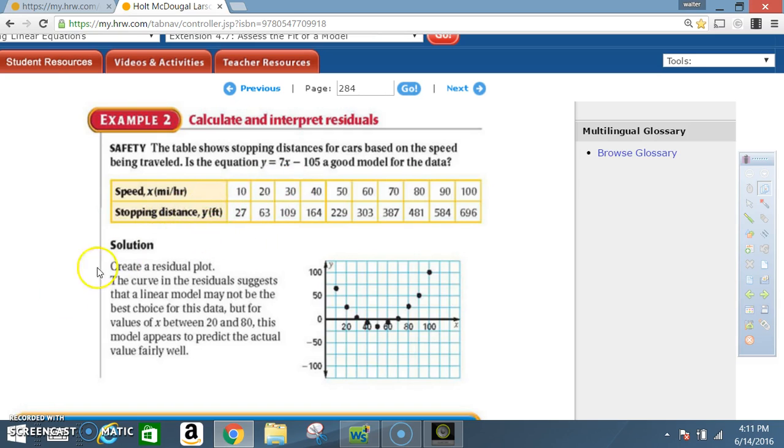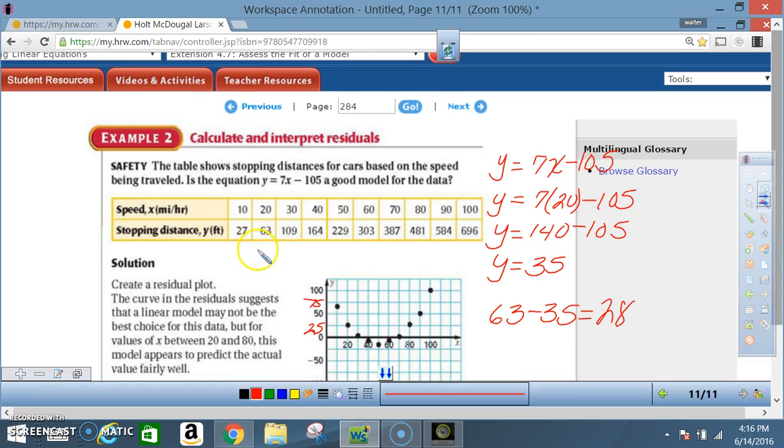Solution: Create a residual plot. The curve in the residual suggests that a linear model may not be the best choice for this data, but for values of x between 20 and 80, this model appears to predict the actual values fairly well. In order to make this residual plot, we had to do the same steps as in example one. Figure out the actual values based on the equation. We're going to work with the number 20. Y equals 7x minus 105, so x equals 20. Seven times 20 is 140, minus 105 is 35.